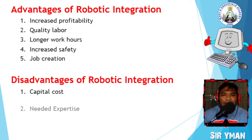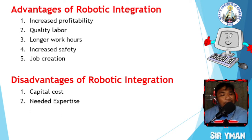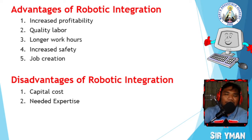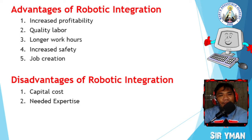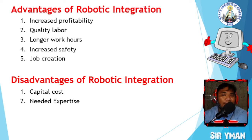The next disadvantage of robotic integration is it needs expertise. Deploying your industrial robot takes training and expertise from an automation company. Kailangan experto rin yung gagamit ng robots. Seeking the right automation team with certified professionals is crucial when integrating robots. Companies will also need time to train their existing employees to perform and interact with their new robotic systems.